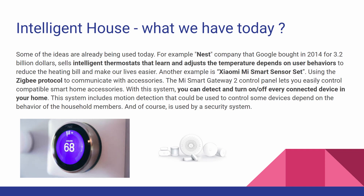What do we have today? Some of these ideas are already in use. For example, Nest, a company that Google bought for 3.2 billion dollars, sells intelligent thermostats that learn and adjust the temperature based on user behaviors to reduce the heating bill and make our lives easier. Another example is Xiaomi Mi Smart sensor set, using the Zigbee protocol to communicate with accessories. The Mi Smart Gateway 2 control panel lets you easily control compatible smart home accessories, including motion detection to control devices based on household member behavior and for use in a security system.